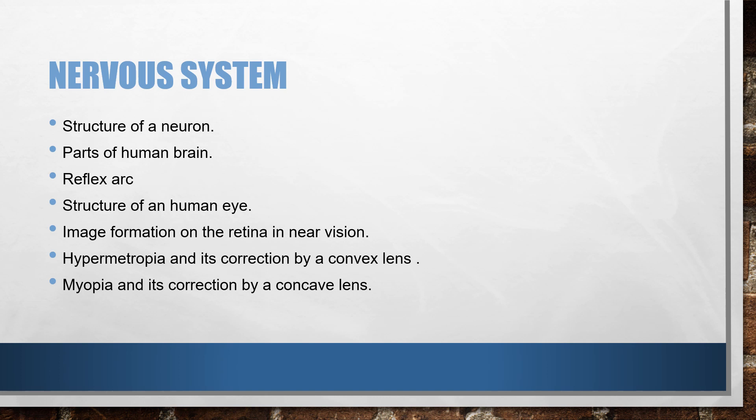Next comes the nervous system. When we come to the nervous system, the first thing that comes to mind is the structure of the neuron. Then comes parts of the human brain, which is very important. Then comes the reflex arc — you have been drawing the reflex arc from basic classes, but all the labeling done at the 10th standard level should be included. Special mention should be made of the sensory nerve fiber, posterior root ganglion, motor nerve, mixed nerve, connector neuron, and the central canal — all parts should be labeled properly.